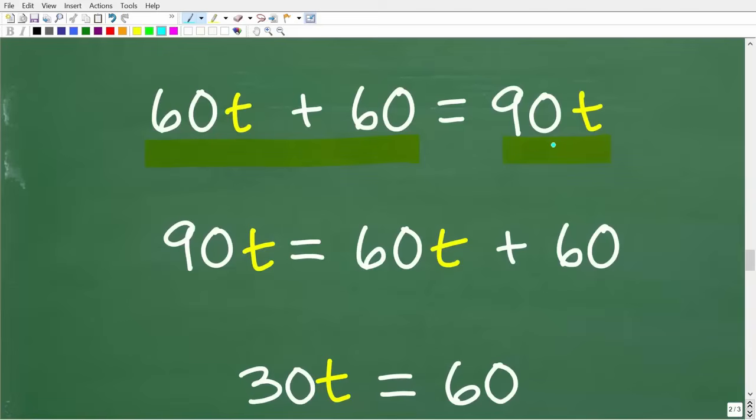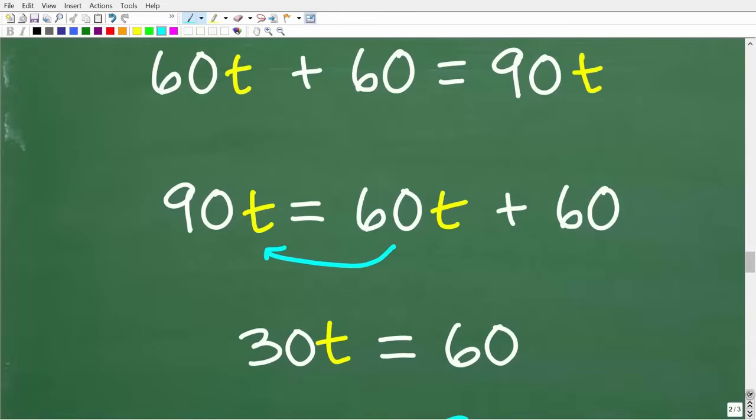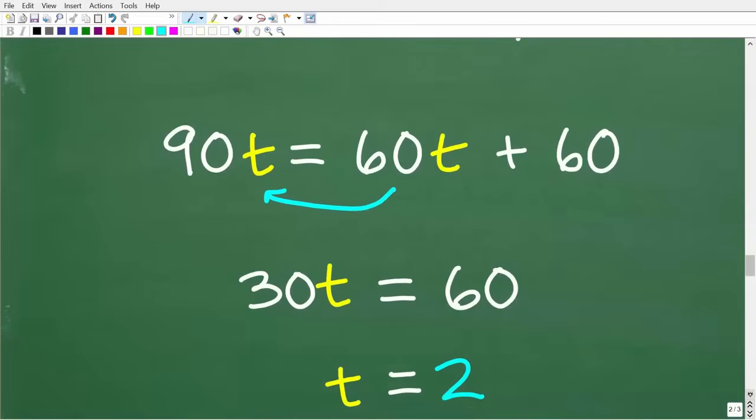All right, so we have 90T on the right-hand side of the equation. Now, really what you want to do is you want to move your variables to the left and your numbers to the right. So if I just kind of leave the equation here, I would have to subtract 90T from both sides of the equation. And then I would have to subtract 60 from both sides of the equation. So I can save myself a little bit of time by moving the 90T over to the left-hand side and then the 60T plus 60 on the right-hand side. So the left is equal to the right or the right is equal to the left. So you're totally allowed to do this in algebra. It's just going to save me one step. Okay, so now I'm going to move that 60T over to the left-hand side of the equation.